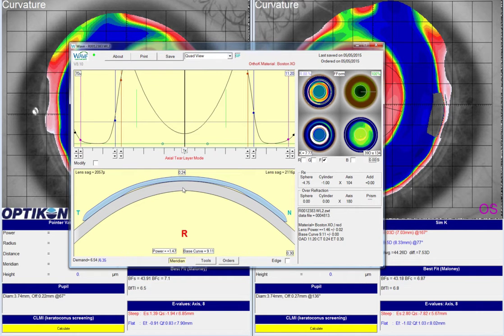The other thing I would consider doing is increasing sagittal depth here on the nasal side of the lens and then decreasing the sag on the temporal side of the lens, with the idea that the lens will hit a little bit sooner on the nasal side and push the lens temporally.